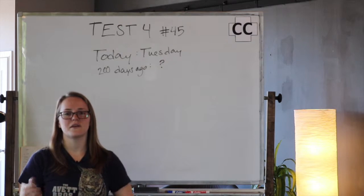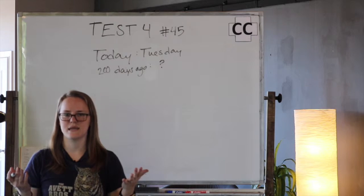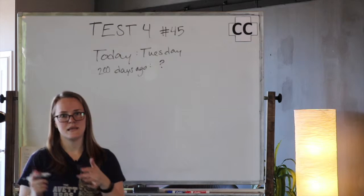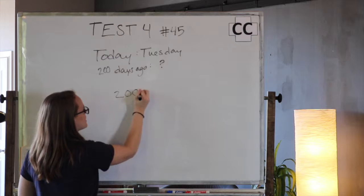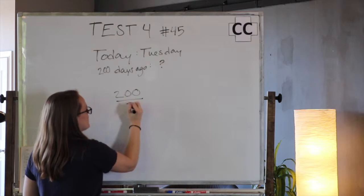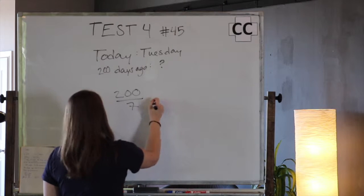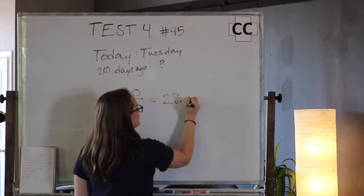So what we're going to do here is first figure out how many complete weeks are in 200 days. So it's probably going to be some number of weeks and a certain number of extra days. So let's start by doing 200, which is our number of days, divided by 7, which is of course the number of days in a week. And when you do that, you're going to get 28 point something or other.